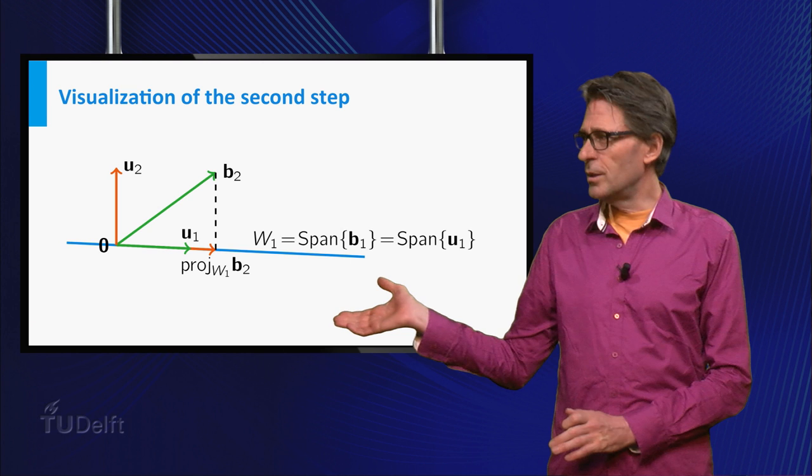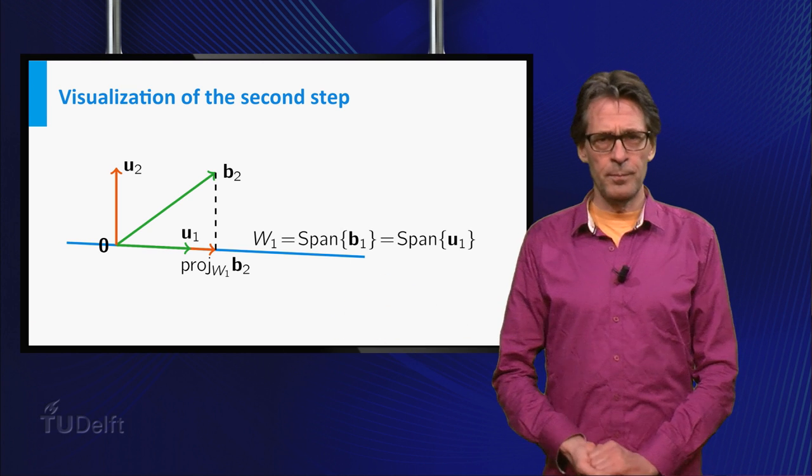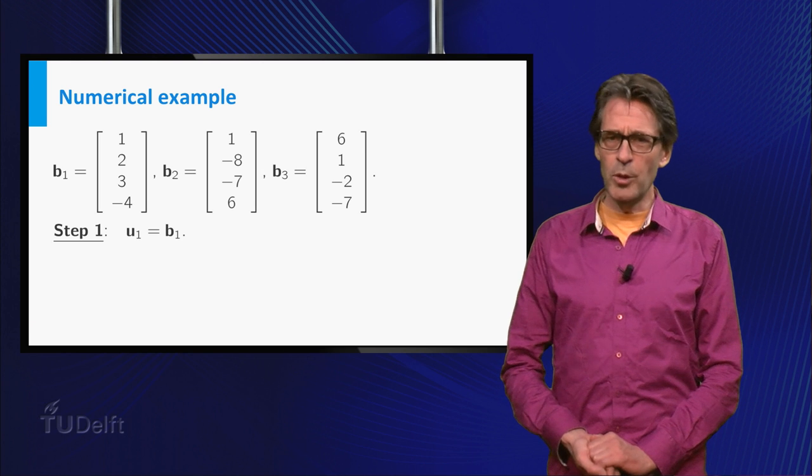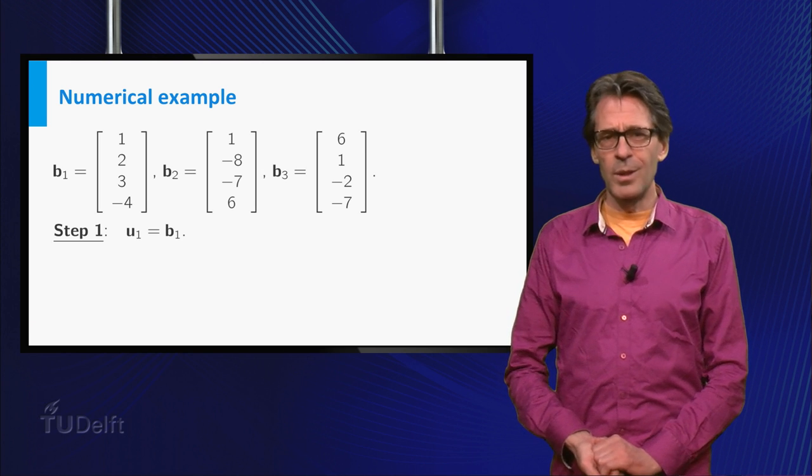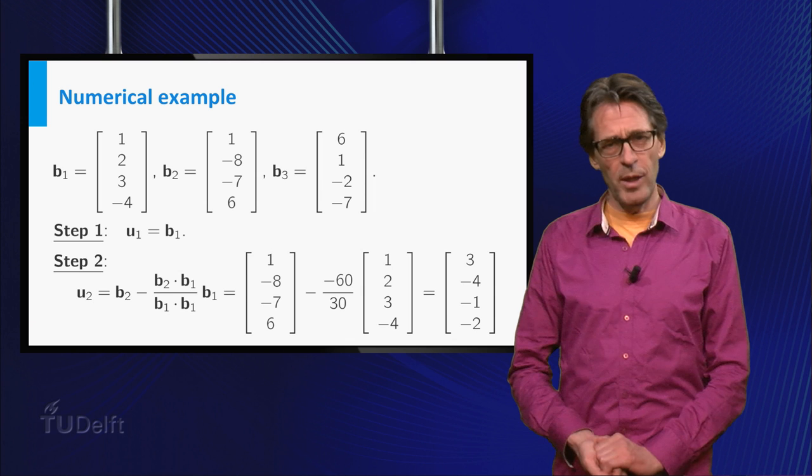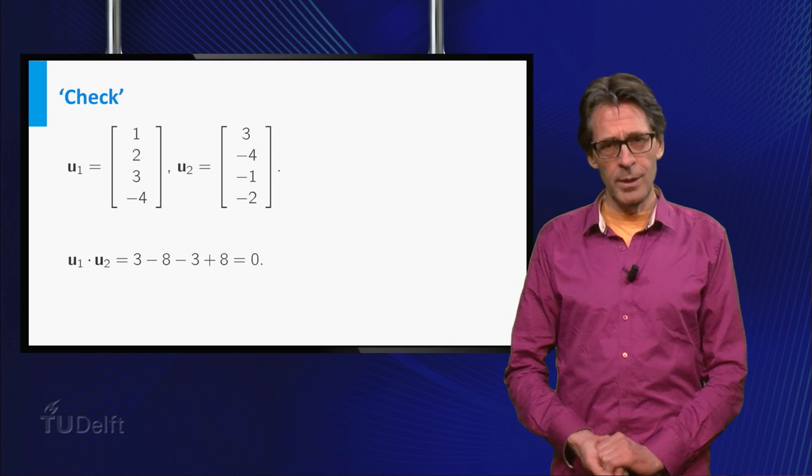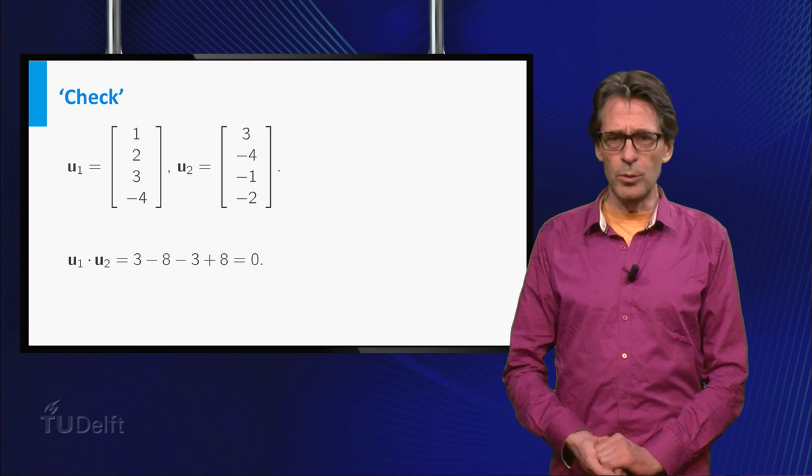A picture sheds some light on it as well. For the example, u2 becomes the vector uc on the slide, which obviously lies in the span of b1 and b2 and is indeed orthogonal to u1, since the inner product of u1 and u2 equals 0.